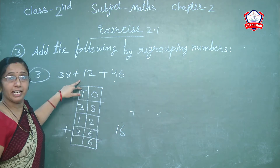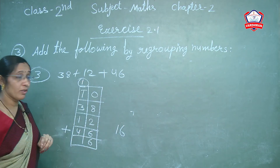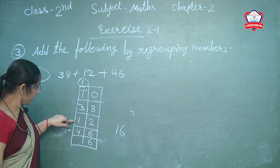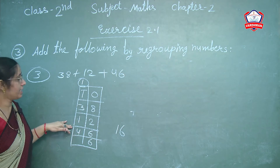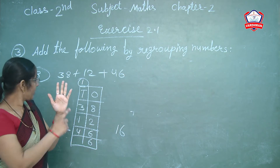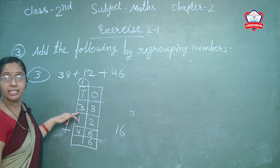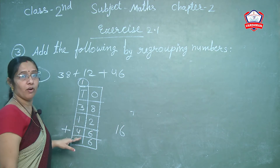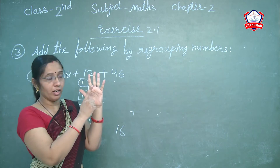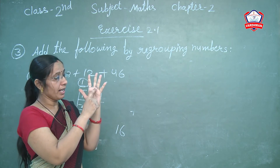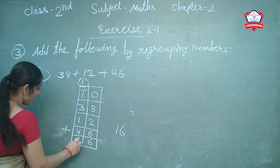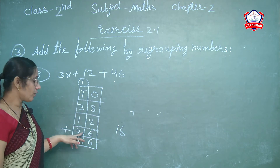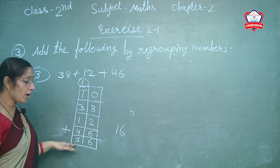Carry 1 forward to the tens column in a separate draw. Now add the tens column: 1 carry plus 3 plus 1 plus 4. First, 1 plus 3 is 4. Then 4 plus 1 is 5. Then 5 plus 4: count 5, 6, 7, 8, 9. How many? 9. So write 9. Therefore 38 plus 12 plus 46 equals 96.